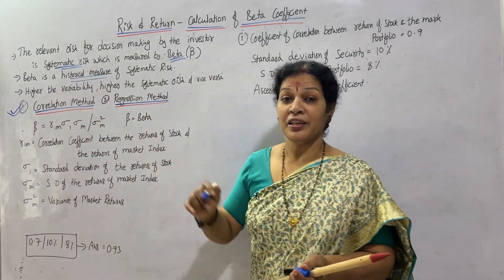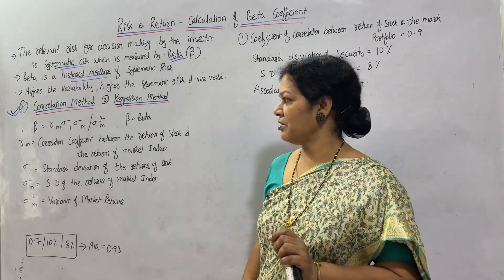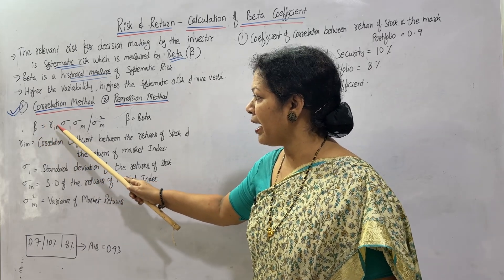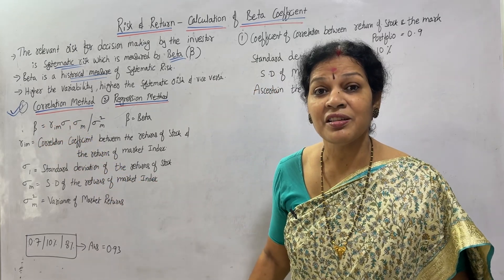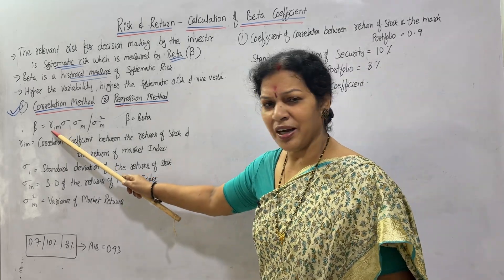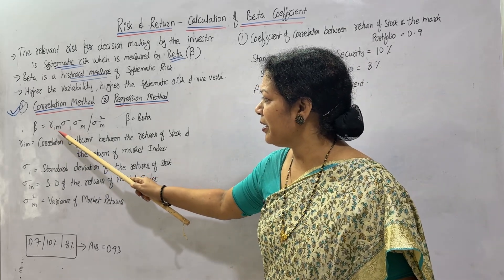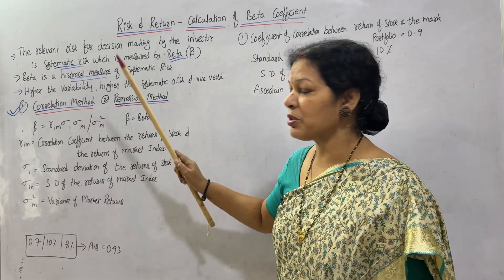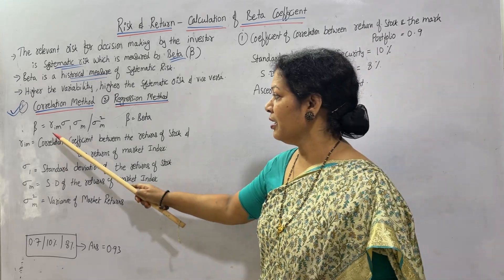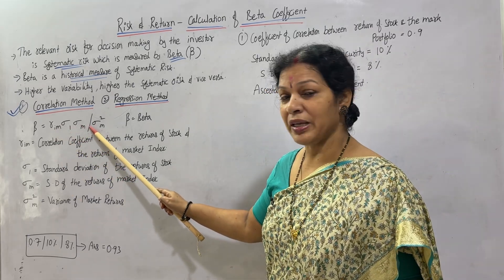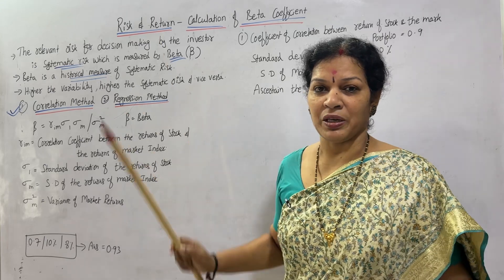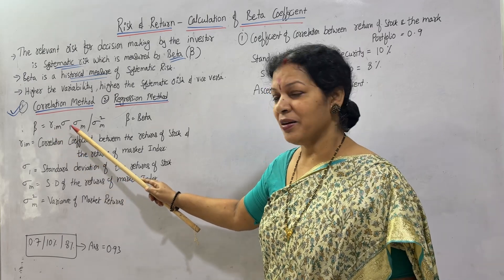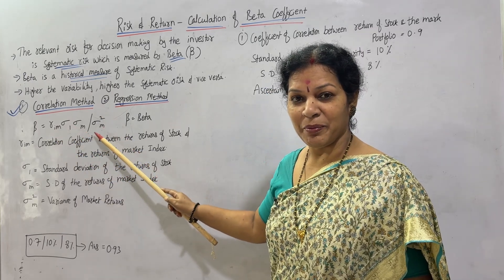The regression method we will see in the next class. Now, the formula you have to remember: Beta is equal to RIM × ρ1 × ρM divided by ρM squared. Where RIM is the correlation, ρ1 is the standard deviation of the stock returns, ρM is the standard deviation of the market index returns, and ρM squared is the variance of market returns.